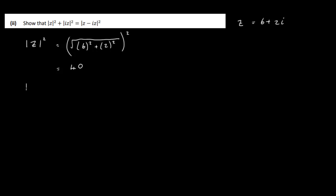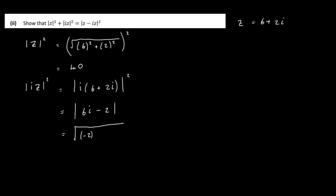Now we want the modulus of iZ, and we want to square that. So i times Z is going to be i times 6 plus 2i. That's the modulus of 6i plus 2i squared, which is actually minus 2. So the modulus of that is the square root of minus 2 squared plus 6 squared, and then we square the entire thing. So that's again going to be 40. So the square root of 40 squared is just 40. This is the left-hand side, so 40 plus 40 gives us 80.